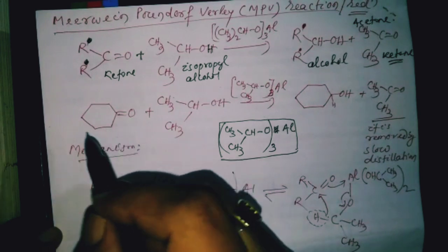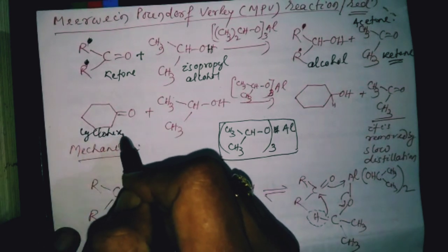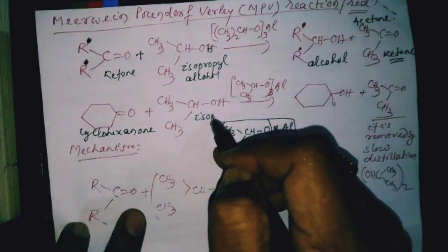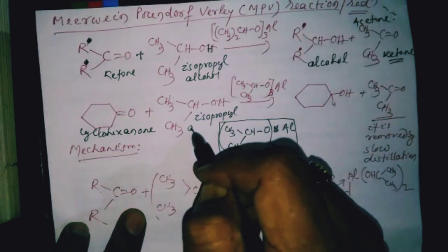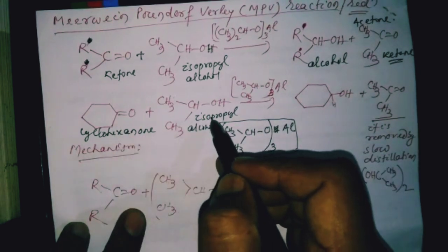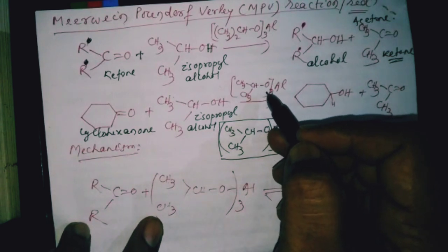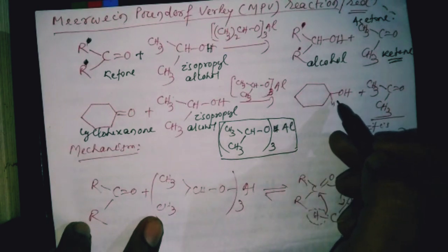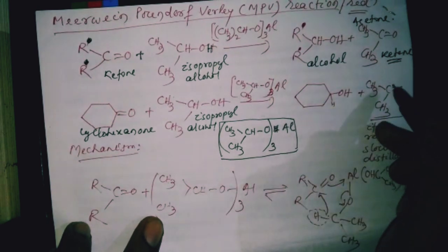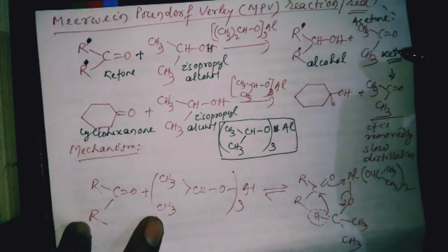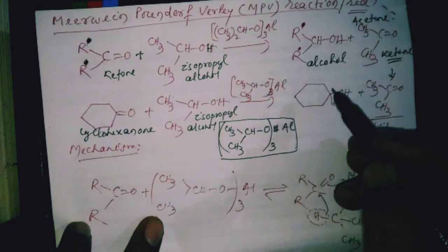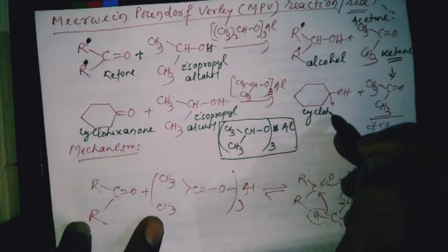Similarly, another example: cyclohexanone. Cyclohexanone is treated with isopropyl alcohol in the presence of aluminum isopropoxide. We get cyclohexanol plus acetone — same compound. And in this reaction, acetone is removed by slow distillation so that more product will be formed.